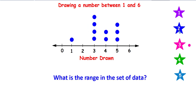What is the range in the set of data? To find the range, you take the biggest number, which is 5, and subtract the smallest number, which is 1. The range in this set of data is 4 — it's the distance between the smallest and the biggest. Look: 1, 2, 3, and 4.